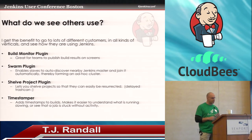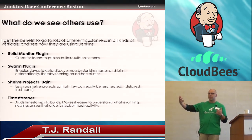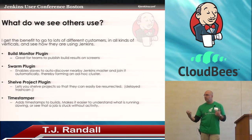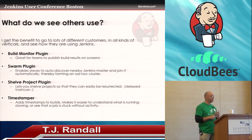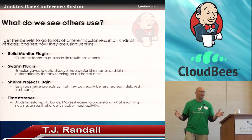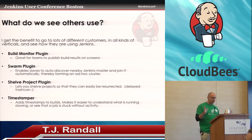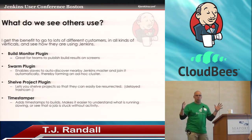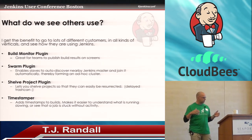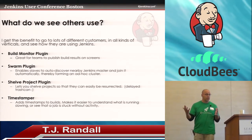Another one that I came across recently is the Swarm plugin. It enables the slaves to auto-discover the Jenkins master—a customer was using this as a key part of their continuous delivery matrix. The Shelf plugin is like a delayed trash can; you don't want to throw anything away just yet, but it's a great way to push that out of your view. And then the Timestamper plugin—we started using this just recently. When you have all your jobs running, you need to understand other concepts: what's running slowly, are jobs being abandoned, are things stuck?